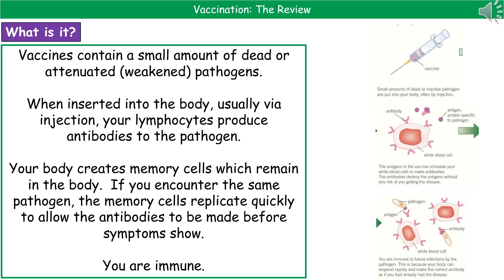You won't get ill, because it's obviously dead or weakened. As a result of that infection, your body will then produce memory cells, which will remain circulating through your bloodstream, so that if you were to encounter that same pathogen at a later stage, the memory cells are able to replicate very quickly and produce large quantities of antibodies in a short space of time to deal with the pathogen before symptoms show. Hence, you are known as immune to that particular pathogen.